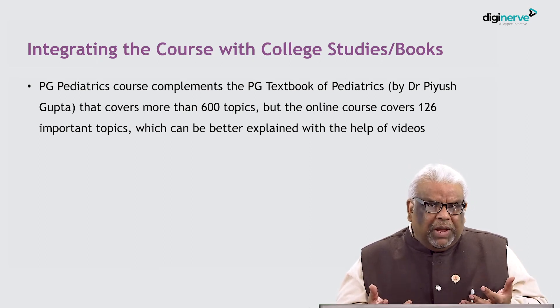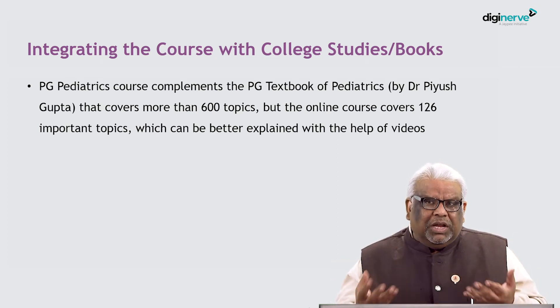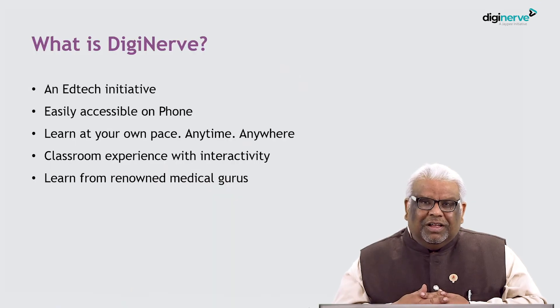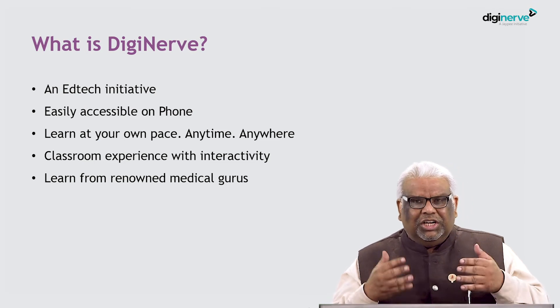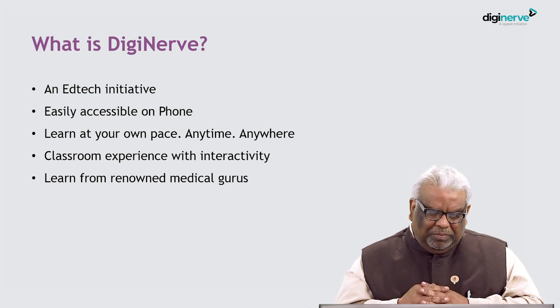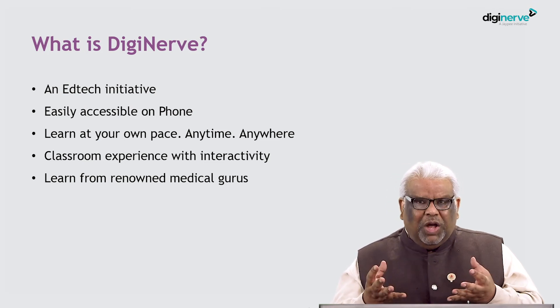This PG pediatric course complements the PG textbook of pediatrics, which I have edited and which covers more than 600 topics. In this module we have taken around 125 to 130 topics that can be better explained with the help of a teacher, so it will be complementary to the PG textbook. As you give us feedback, we can always increase the number of sessions and make it more lively — the course will evolve with your feedback and positive suggestions. DigiNerve, the platform on which this module is hosted, is an initiative of JP Brothers, easily accessible on phone through an application.